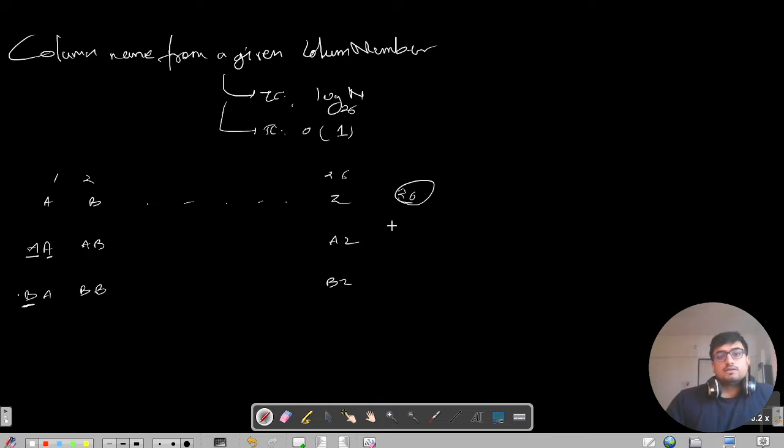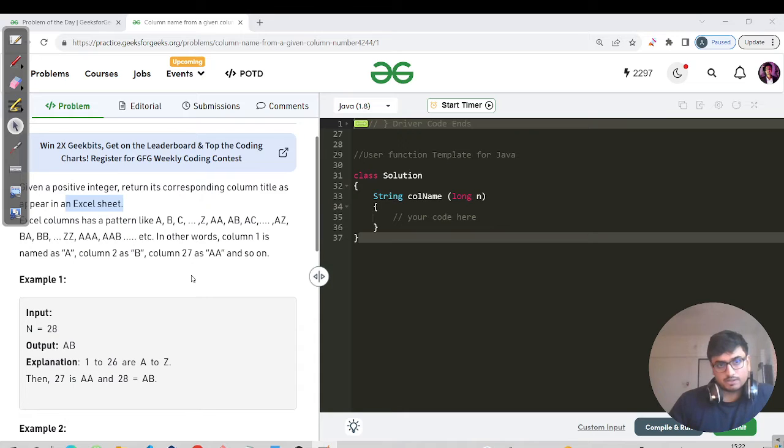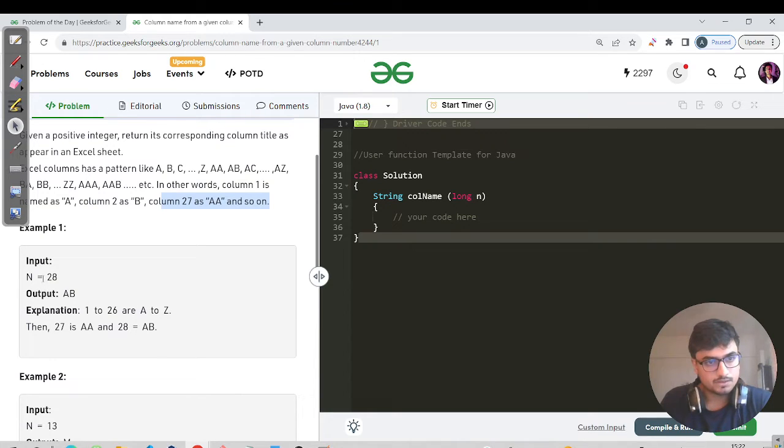Then again, the third character remains constant and then A to Z. It goes on, right? Now we have a good understanding of what an Excel sheet looks like when we talk in terms of columns. In other words, column 1 is named A, column 2 is B, column 27 as AA, and so on.